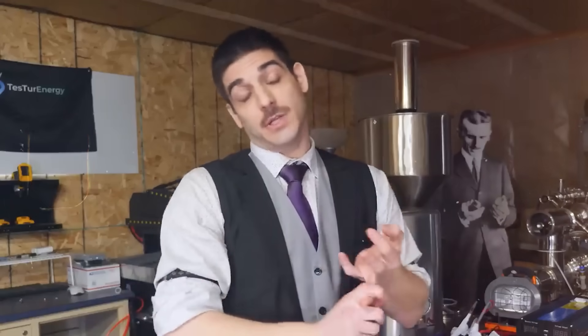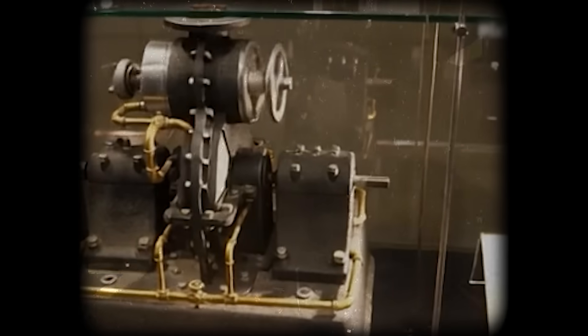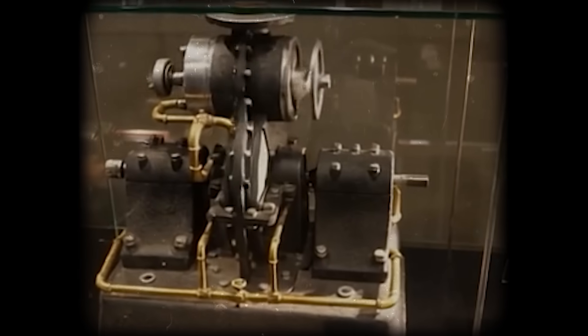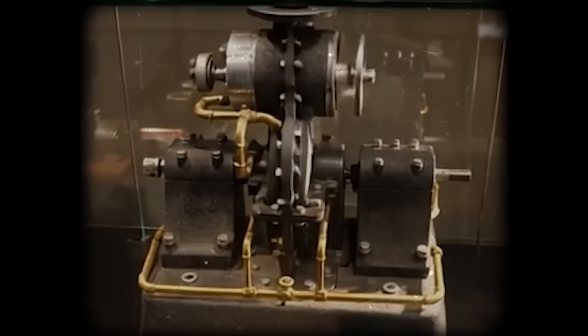But there was a problem. The Tesla turbine produced incredible rotational speed, but very little torque. It could spin fast, but it struggled to move heavy loads.